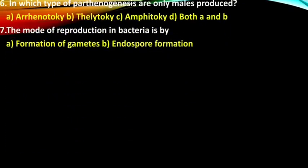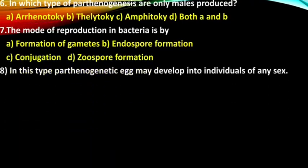Question 6: In which type of parthenogenesis are only males produced? Question 7: The mode of reproduction in Bacteria is by — in this option, conjugation is the right answer; others are wrong answers regarding this question.